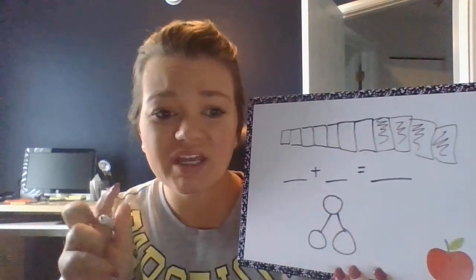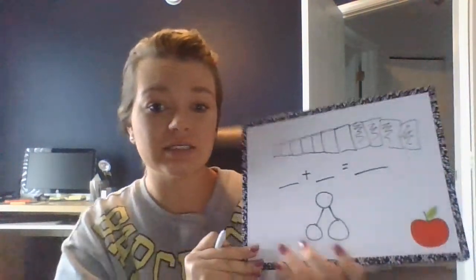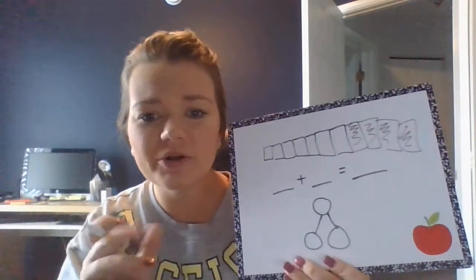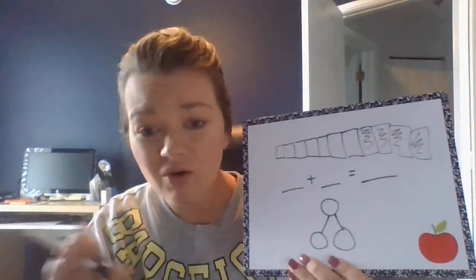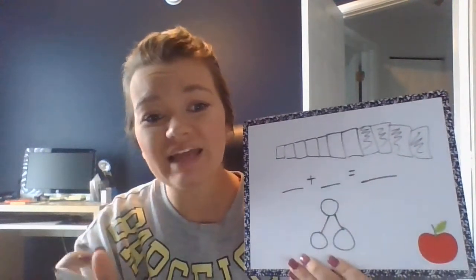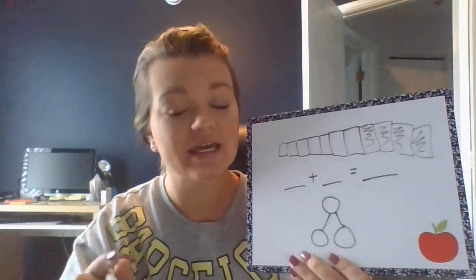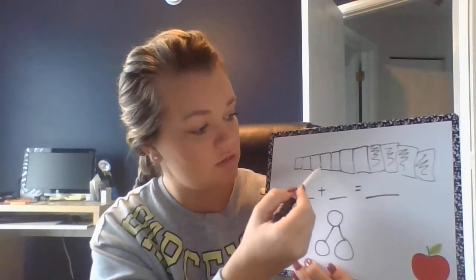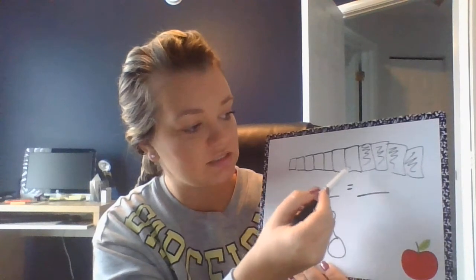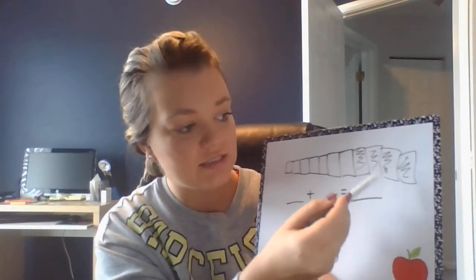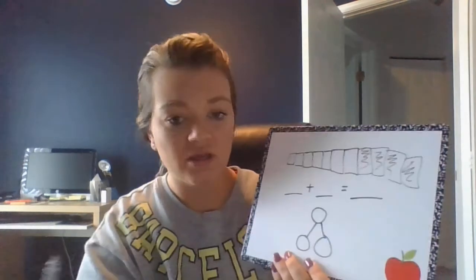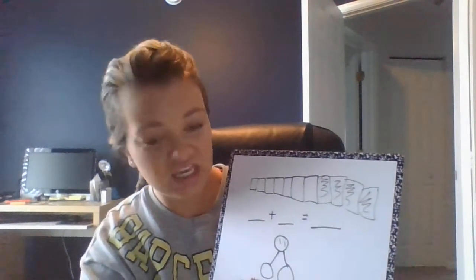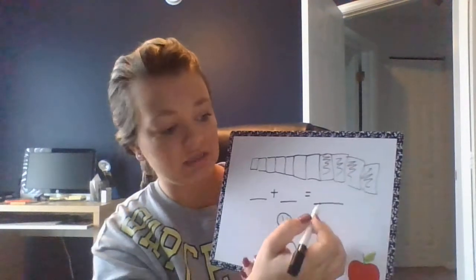All right. So if you made a number sentence, think about a number bond. In order to find my whole or my total, I need to count everything all together. So let's count all of our cubes: one, two, three, four, five, six, seven, eight, nine, ten, eleven. So if I'm doing a number bond, I know eleven is my whole and eleven is going to be my sum.